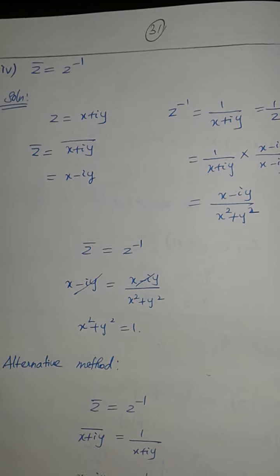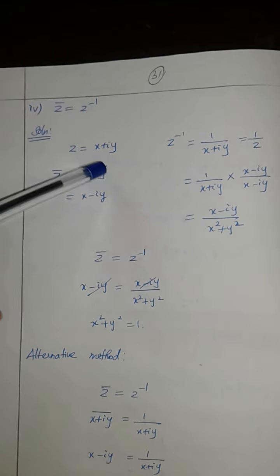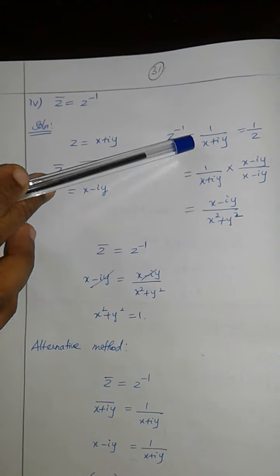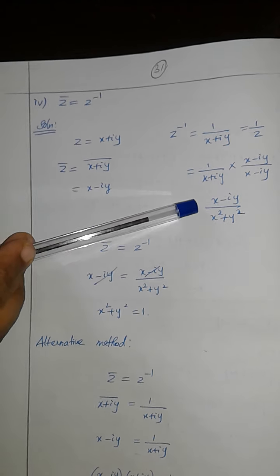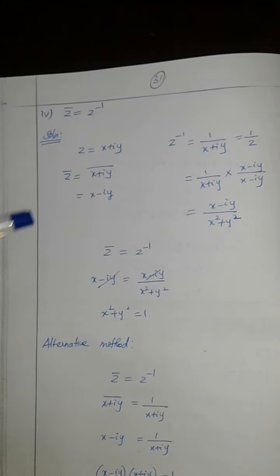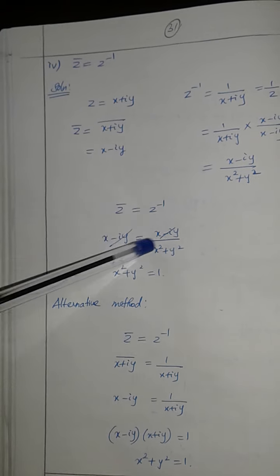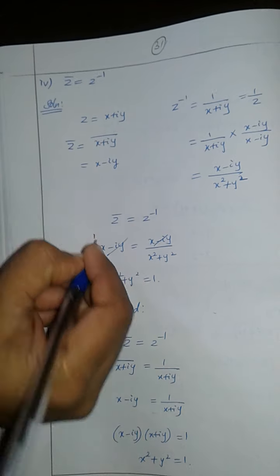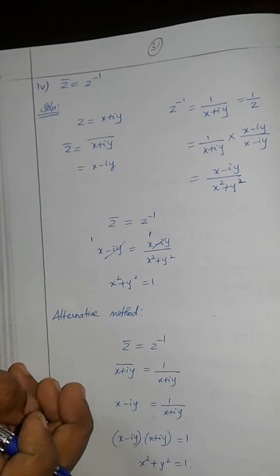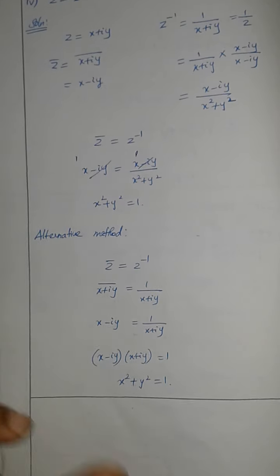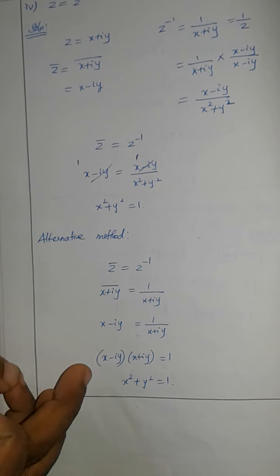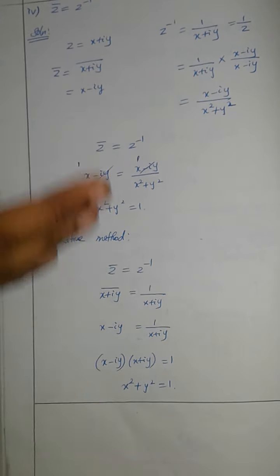Here is the third subdivision. Fourth subdivision: Z̄ is equal to z inverse. Z is x plus iy, so Z̄ is x minus iy. Equating the two expressions and simplifying the numerator, we get x² plus y² is equal to 1.